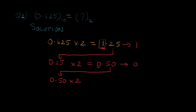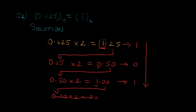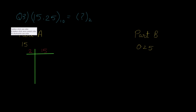For the next iteration, 0.50 multiplied by 2 gives 1.00. We write down the integer part — which is 1 — and ignore it. For the next iteration we have 0, and since 0 multiplied by 2 gives 0 again, we stop the process. We've reached our answer: 101 in binary. So 0.625 in decimal is equal to 0.101 in binary.